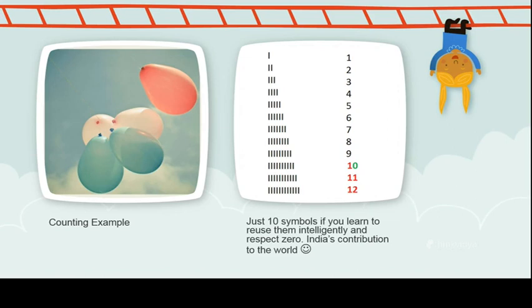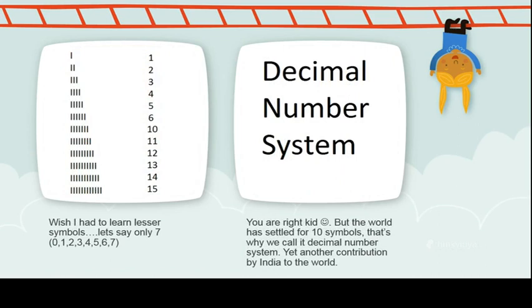After this, the kid might come back and ask, 'What if I don't want to learn 10 symbols? Why don't they just have 7 symbols—let's say from 0, 1, 2, 3, 4, 5, 6—and after that start reusing the symbols: 10, 11, 12, and so on?'